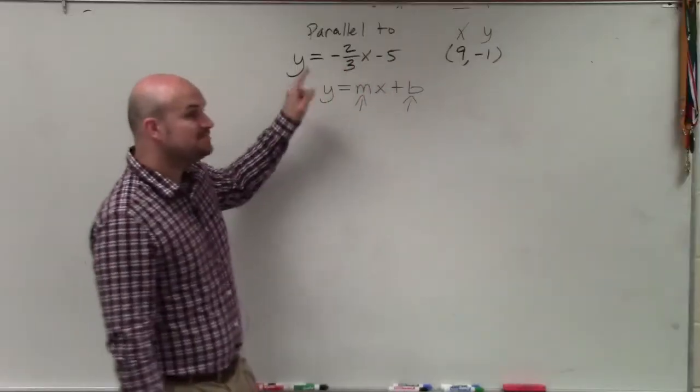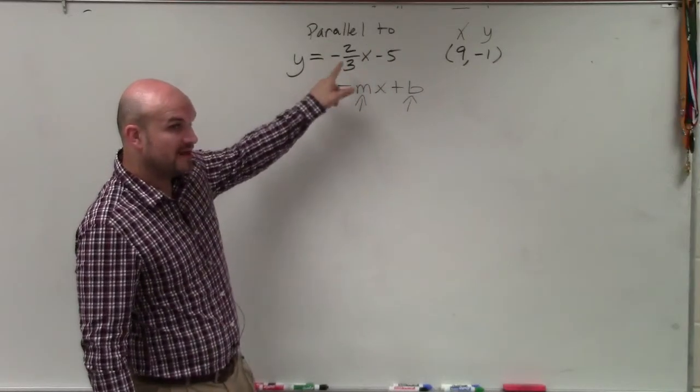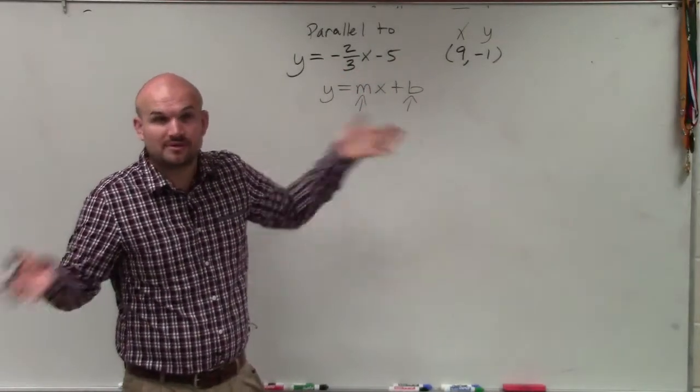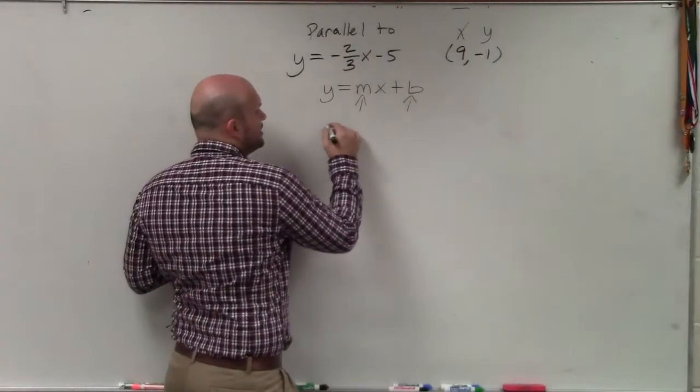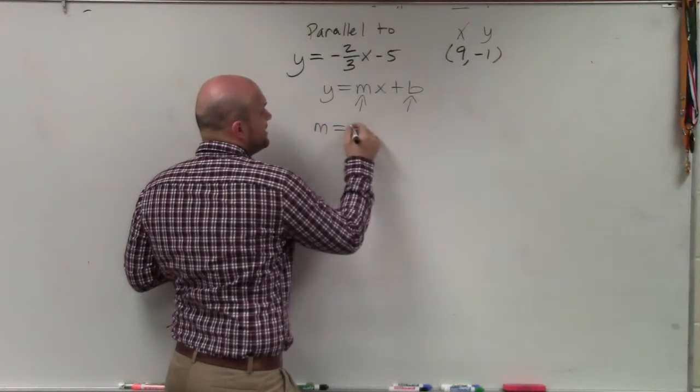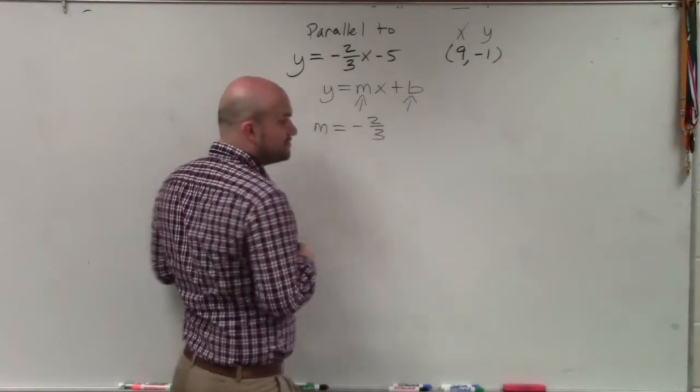The slope, if the line is parallel to this line, then we know that it has to have exactly the same slope. Because in geometry, remember, you talk about parallel lines never intersect. So they're going to have exactly the same slope. So I know my new slope is going to be a negative 2 thirds.